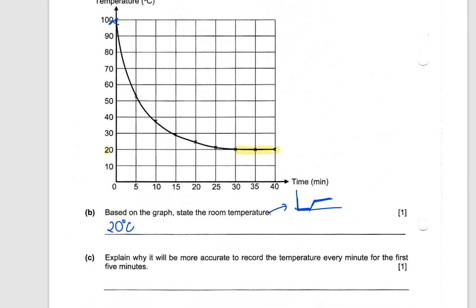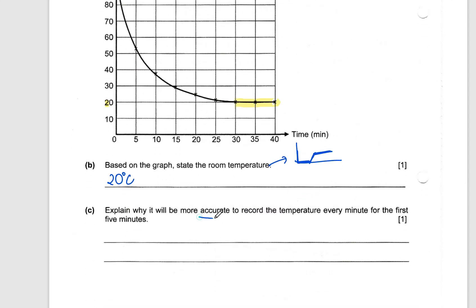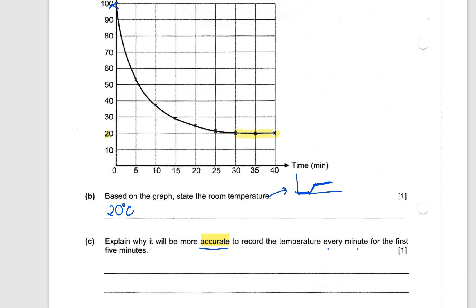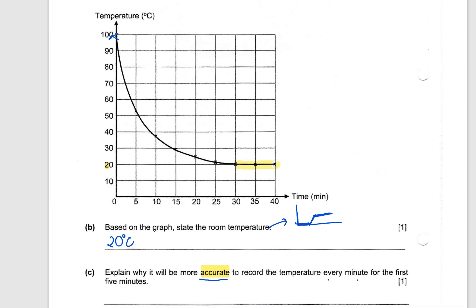Now the last question is a bit tricky. Explain why it will be more accurate to record the temperature every minute for the first five minutes. So this question is testing you on accuracy which is not commonly tested. A lot of times in exam papers you see why you need to repeat an experiment and that's to make it more reliable. But how do I make it more accurate? So let's look at this. And the thing about this question that makes it difficult is there's no standard answer. You can learn a few examples to make your life a bit easier.